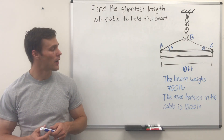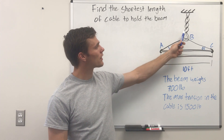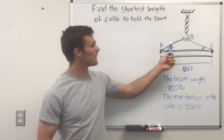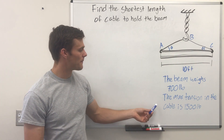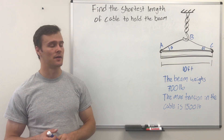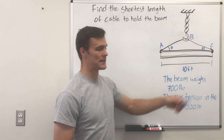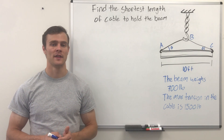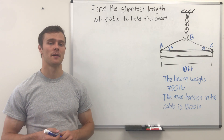Here we have a problem where we have a beam hanging from a cable, suspended by a hook coming out from the wall. We need to find the shortest length that this cable can be. We're given that the beam weighs 700 pounds and the maximum tension the cables can support is 1500 pounds. The first step to solve this problem — and the first step in a lot of engineering problems — is to set up a free body diagram.